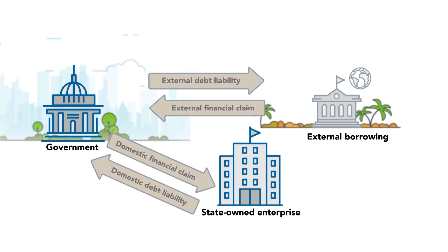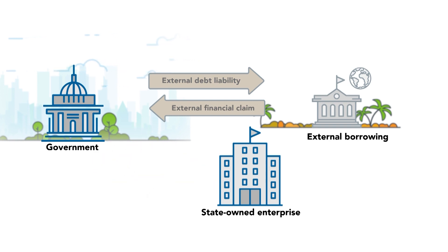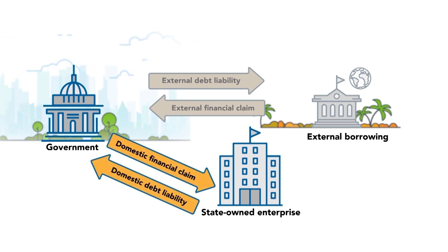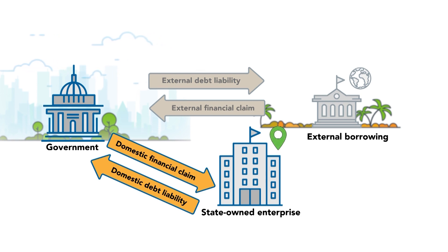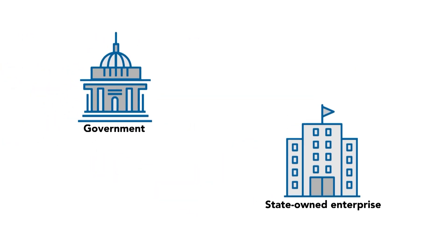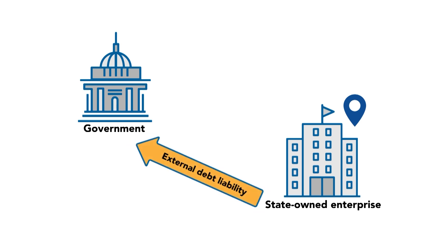Because the government and the state-owned enterprise are both public sector units, these stock positions will be eliminated in consolidation when statistics for these two units are combined. Typically, the unit to which government on-lends is a resident, inside or outside the public sector. But it could be a non-resident too. In that case, an external debt liability and external financial claim are involved. The servicing of these two separate debt liabilities should also be handled with caution.